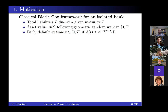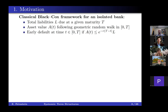Starting with the motivation: if we go to the classical finance models, we have the Black-Cox framework, where we have a single bank that has liabilities L due at some maturity time capital T in the future. Assets evolve over time, following a geometric random walk between time zero and capital T. This bank will declare itself to be in default if its assets are valued less than its liabilities. If you are a shareholder and the assets are worth less than the discounted liabilities, you're better off declaring bankruptcy. This is a very classical default covenant.